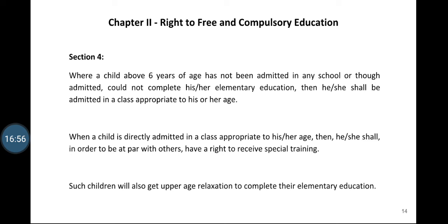Then the question arises: how will the child learn in class 3 without any prior knowledge? So the next clause states that when a child is directly admitted in an age-appropriate class, he or she shall have a right to receive special training — meaning teachers should give remedial instruction to fill the knowledge gap. Such children will also get upper age relaxation to complete their elementary education.